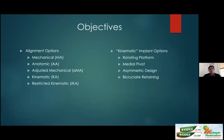My objectives are: first, to provide an overview of various alignment systems for total knee arthroplasty. The traditional approaches include mechanical and anatomic alignment. Newer techniques include adjusted mechanical, kinematic, and restricted kinematic alignment. Additionally, new implants called kinematic implants are designed to restore native knee kinematics. Examples I'll discuss include rotating platform designs, medial pivot designs, asymmetric designs, and a bicruciate retaining design preserving both ACL and PCL.